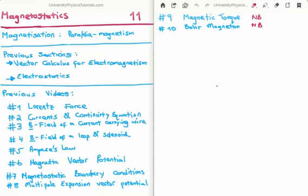In this video I'm going to continue on with my tutorials on magnetostatics. This is video number 11 and I'm going to discuss magnetization or magnetic polarization, specifically paramagnetism and diamagnetism. There are 10 videos previous to this in this section. The two most important of which are videos 9 and 10 where I discussed magnetic torque and the Bohr magneton.